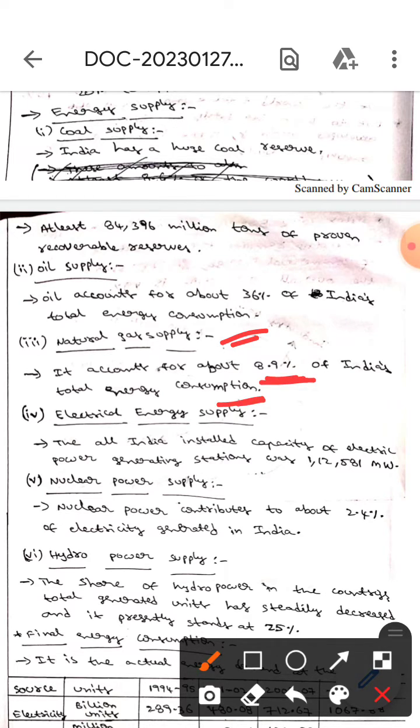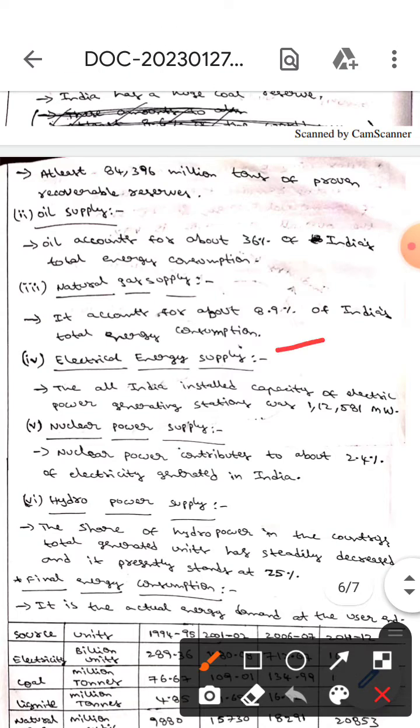Whereas the next one is electric energy supply. Here the all India installed capacity of electric power generating stations was one lakh 12,581 megawatts.